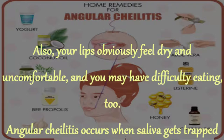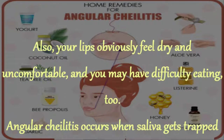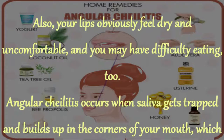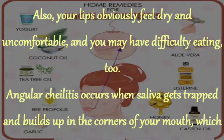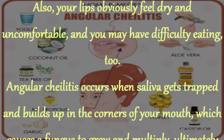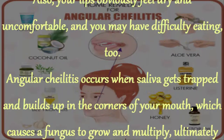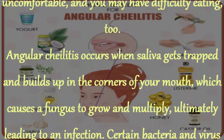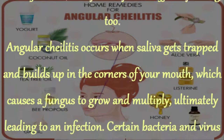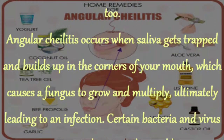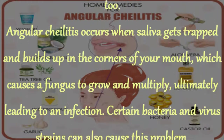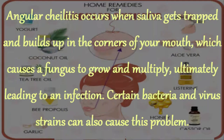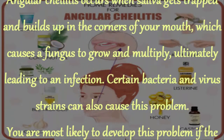Also, your lips feel dry and uncomfortable, and you may have difficulty eating. Angular Cheilitis occurs when saliva gets trapped and builds up in the corners of your mouth, which causes a fungus to grow and multiply, ultimately leading to an infection.